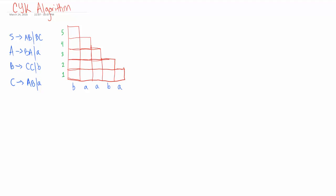What's up everyone, this is Education About Stuff. I'm going to be showing the CYK algorithm today. What the CYK algorithm does is, whenever you have a string W, it looks at what kind of derivations you can obtain while referencing a grammar, for different substrings of that larger string. We look at derivations of just B, just A, and so on, then BA, BAA, BAAB, and finally BAABA.